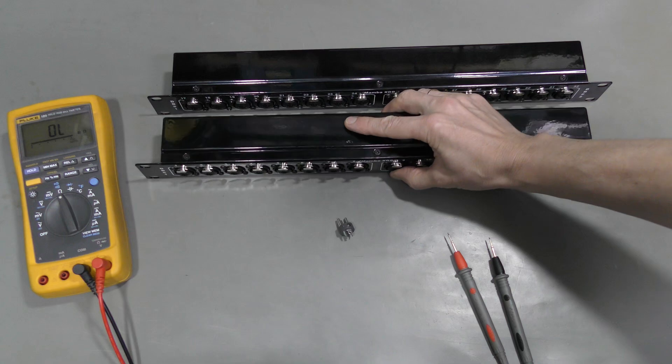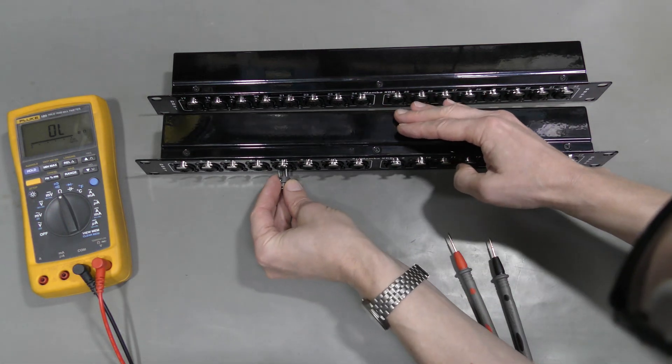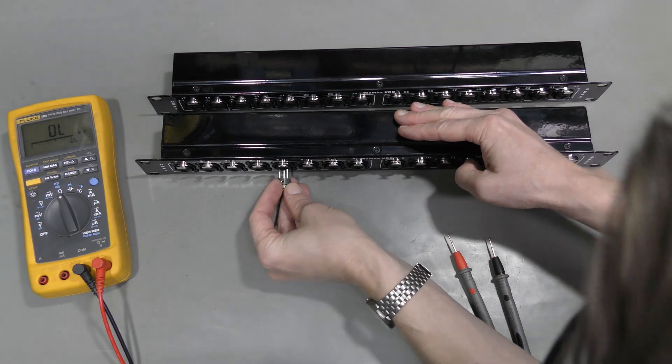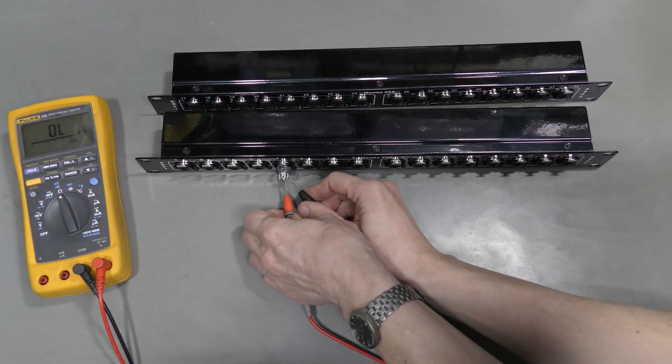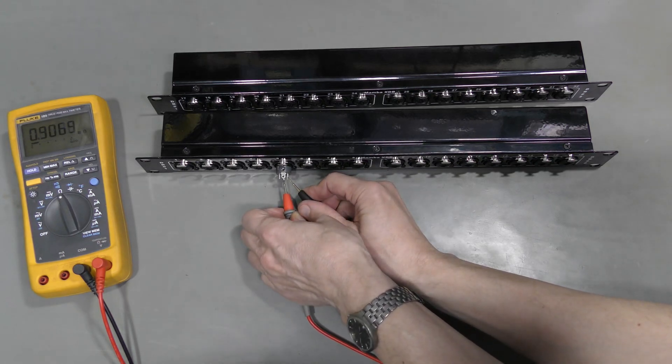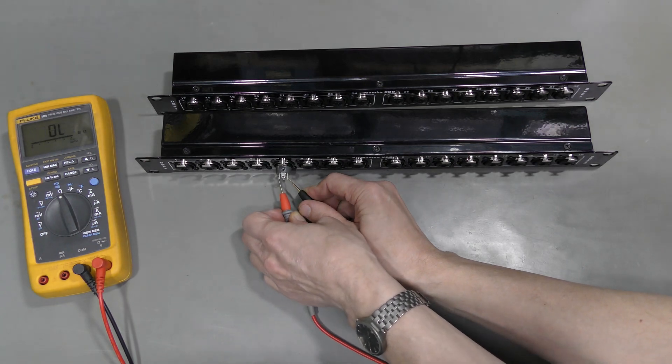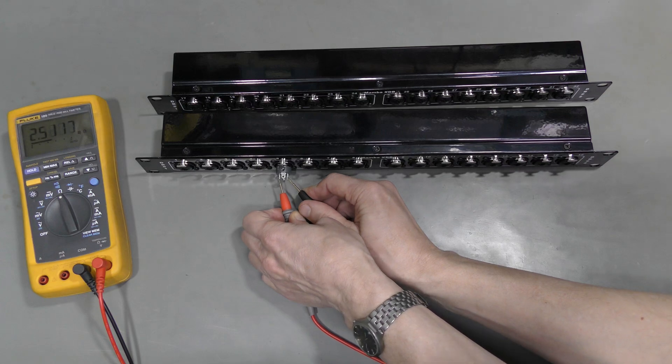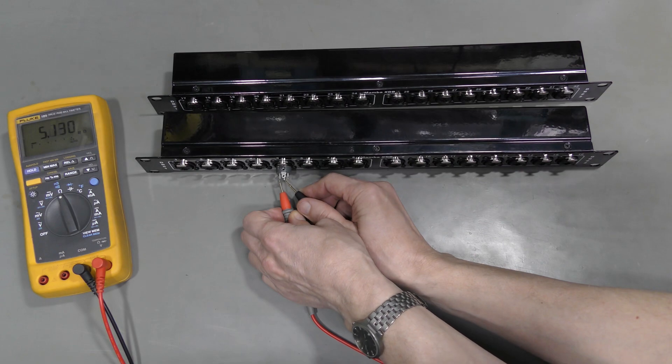And let's check random connector here. Ground and one line, above a meg. The other line, 2.4. Between the lines, 5 meg.